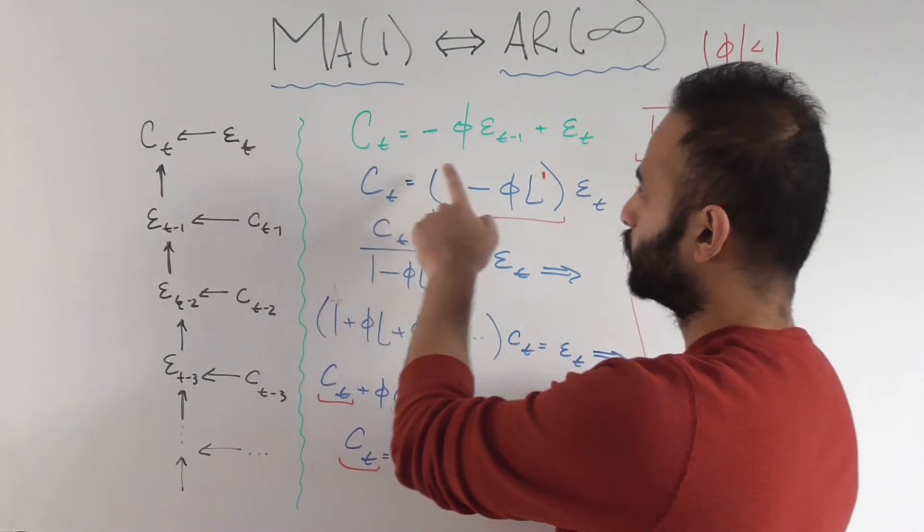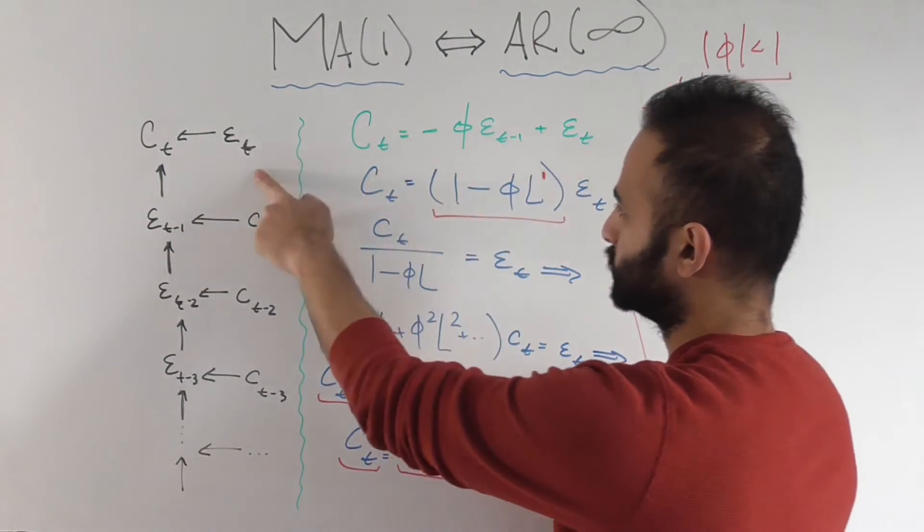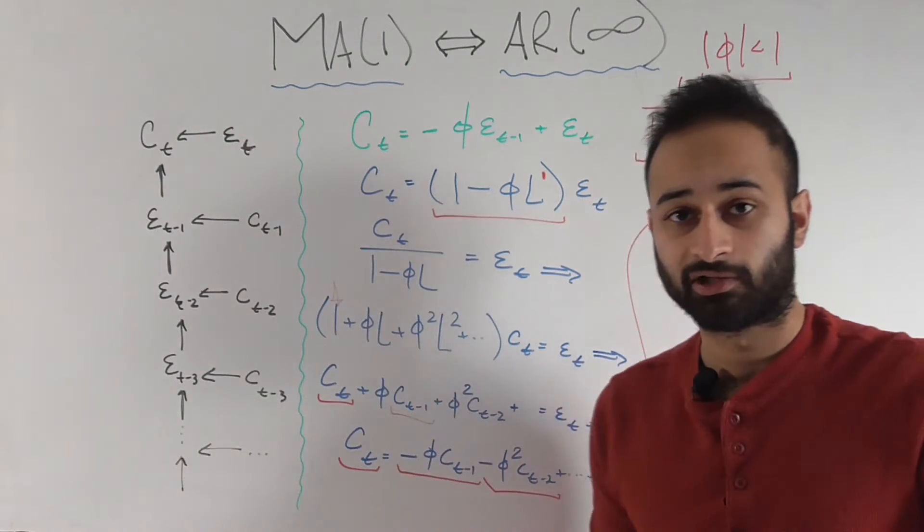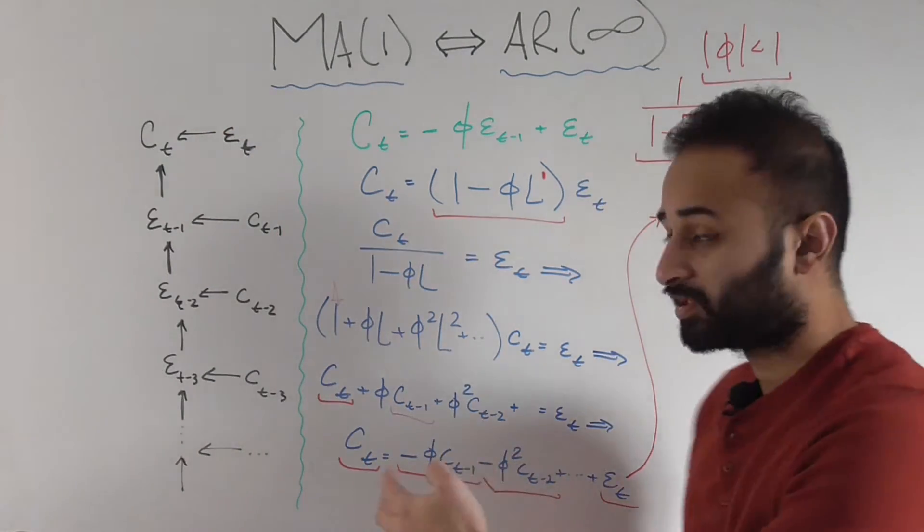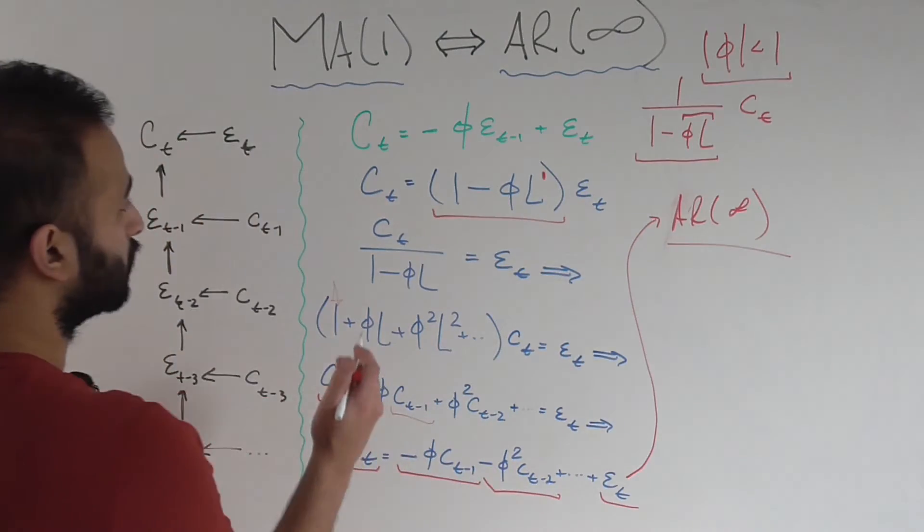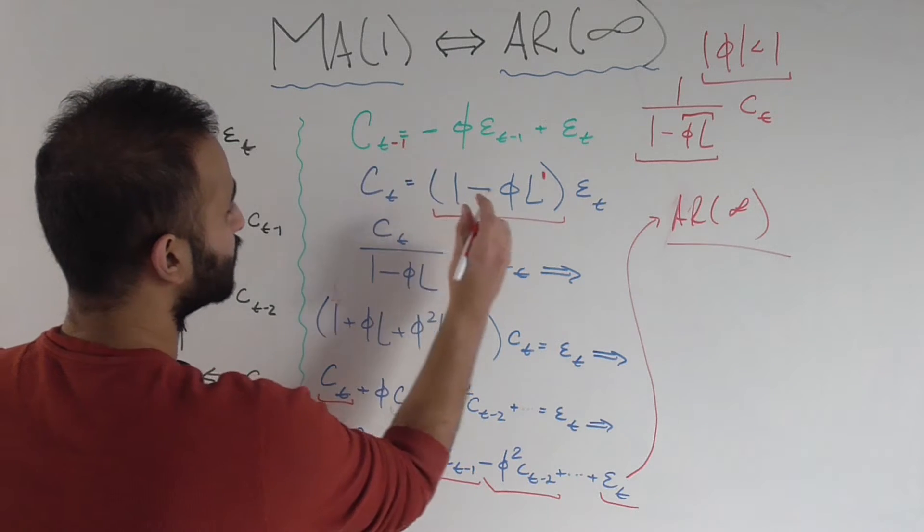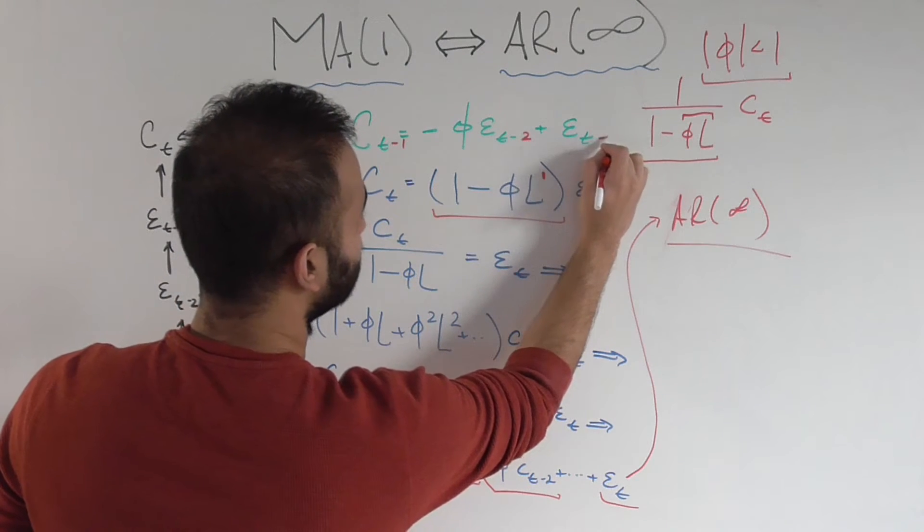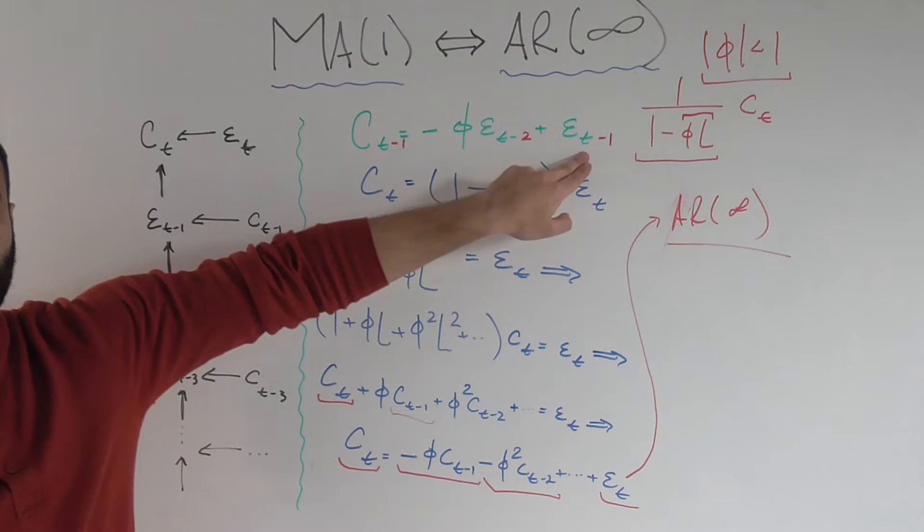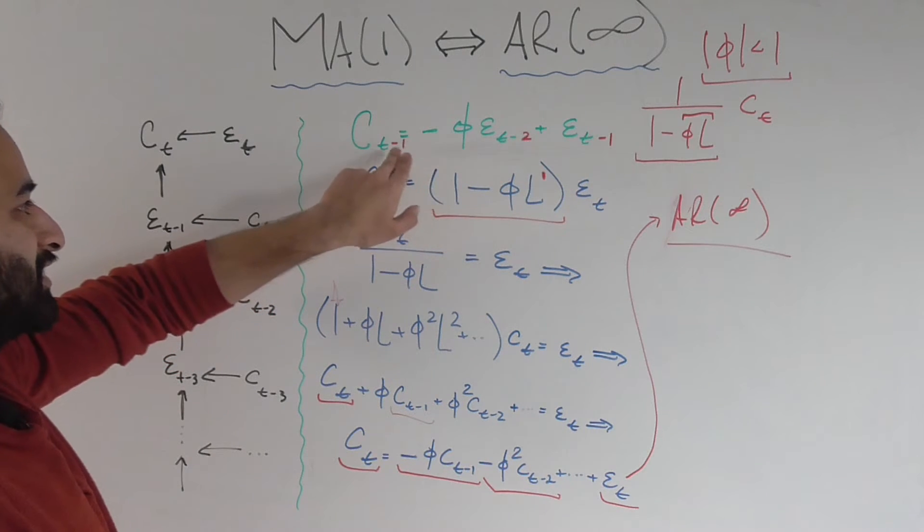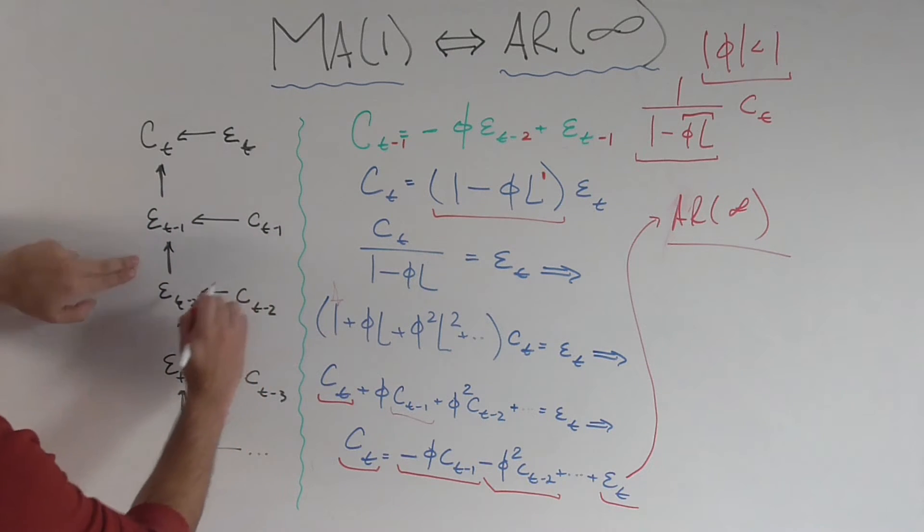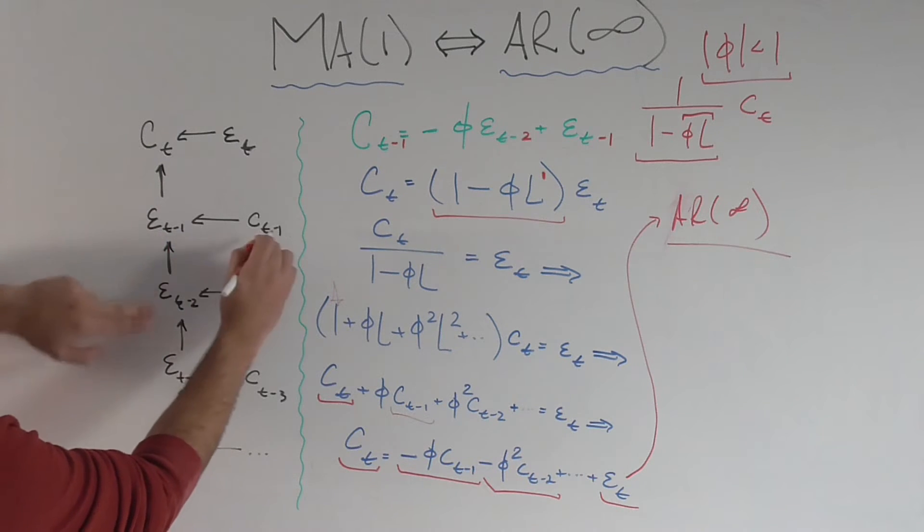Now let's see if we can derive how C sub T could also potentially be a function of C sub T minus one, and C sub T minus two, and all these infinite C lagged values. To do that, let's first take this equation and do T minus one instead. So this becomes a T minus two, and this becomes a T minus one. Basically, if we rearrange that equation a little bit, we're going to find that epsilon sub T minus one is a function of epsilon sub T minus two and C T minus one. So, epsilon sub T minus one is a function of C T minus one and epsilon sub T minus two. So that's what these arrows represent.